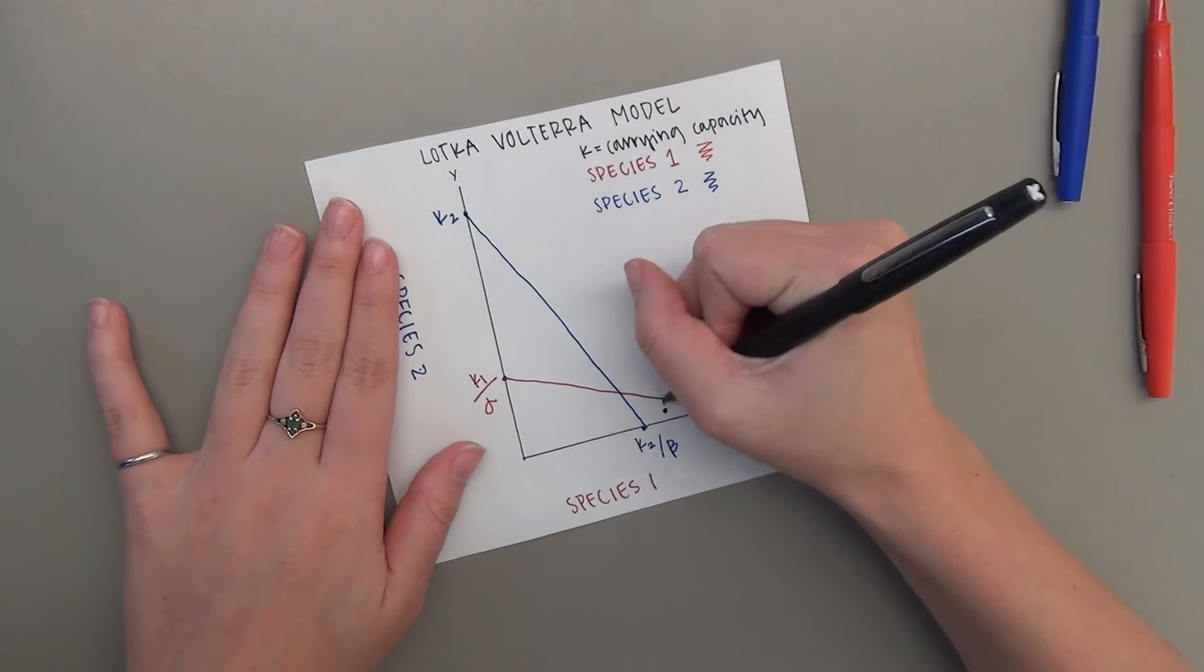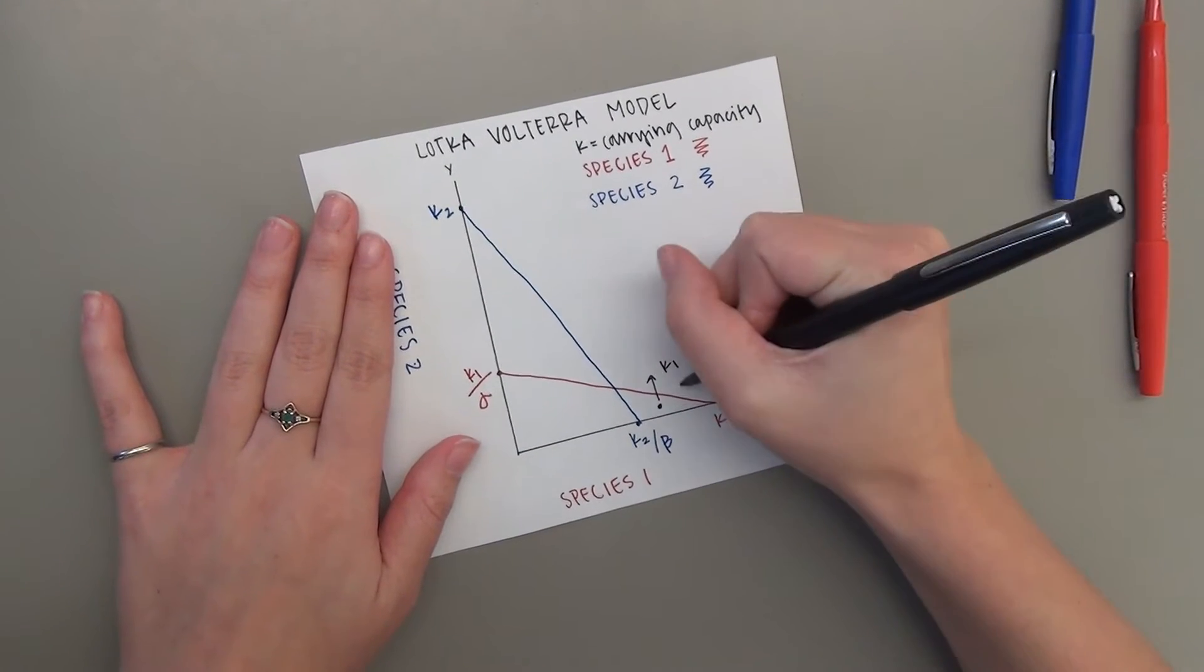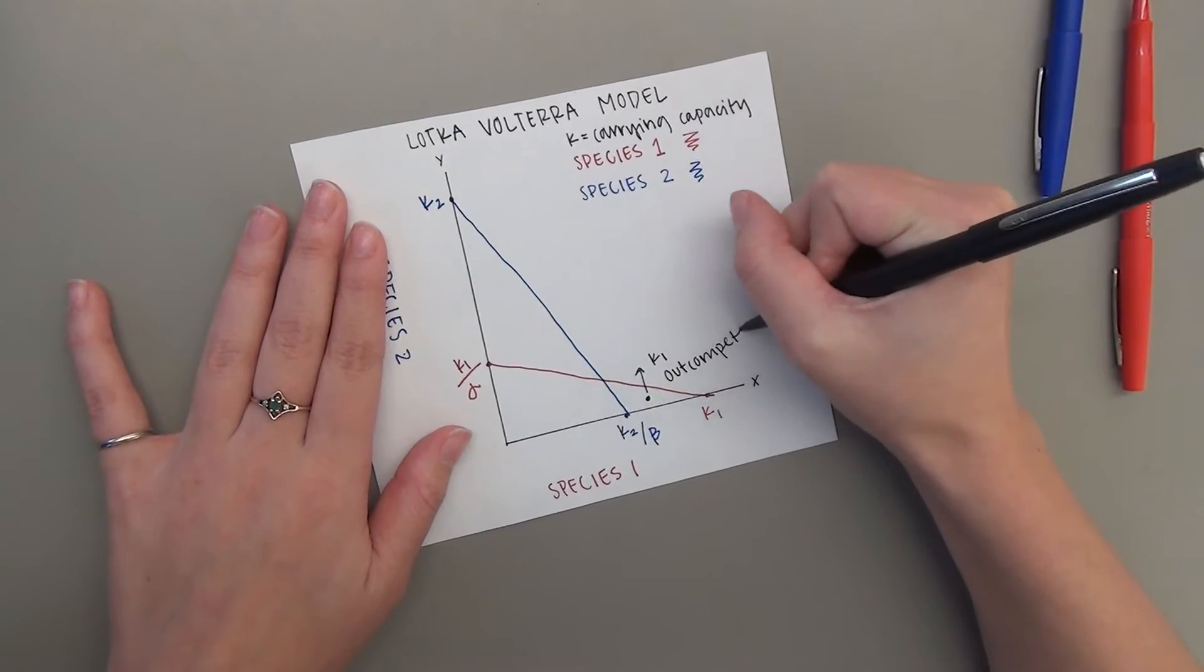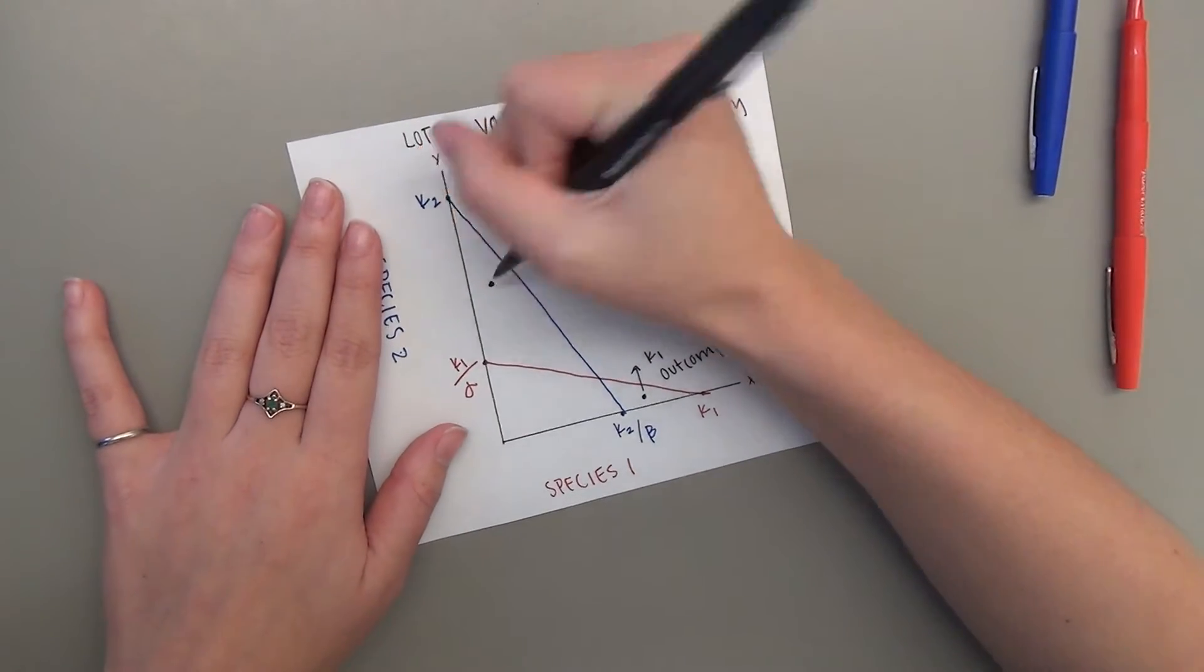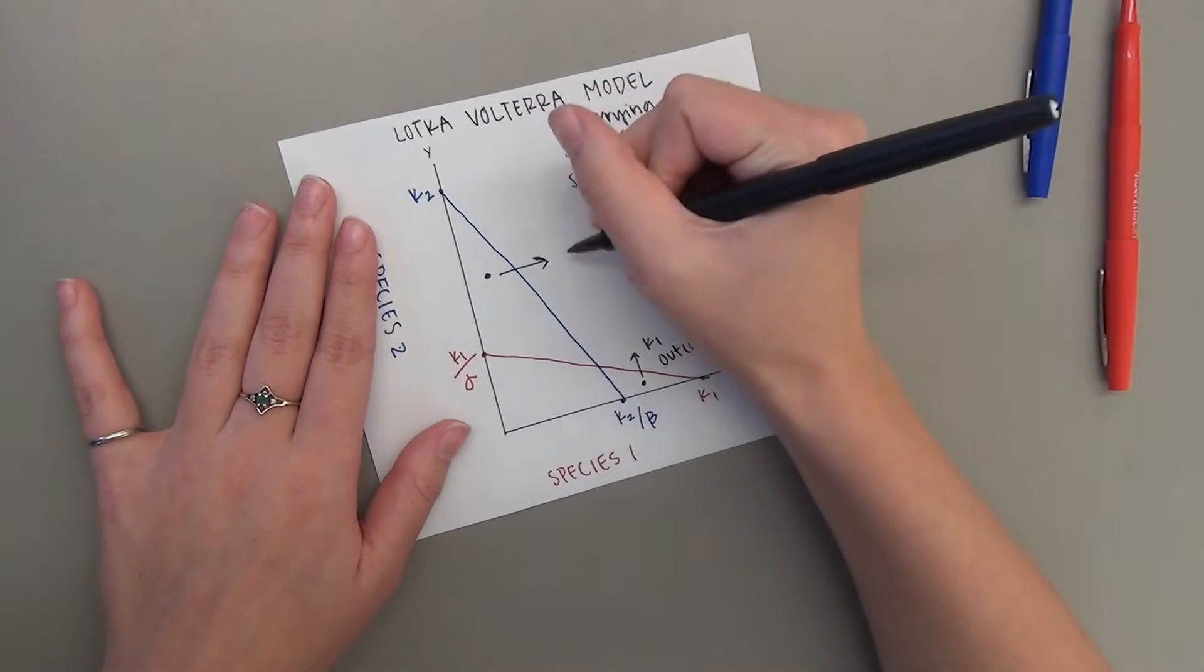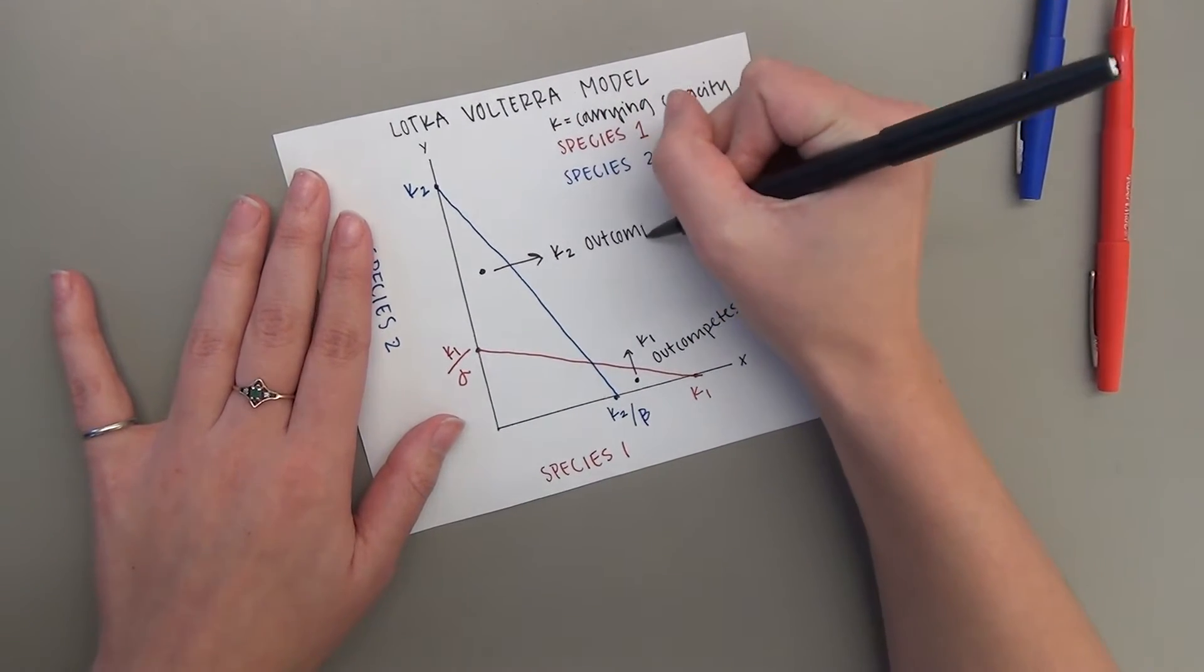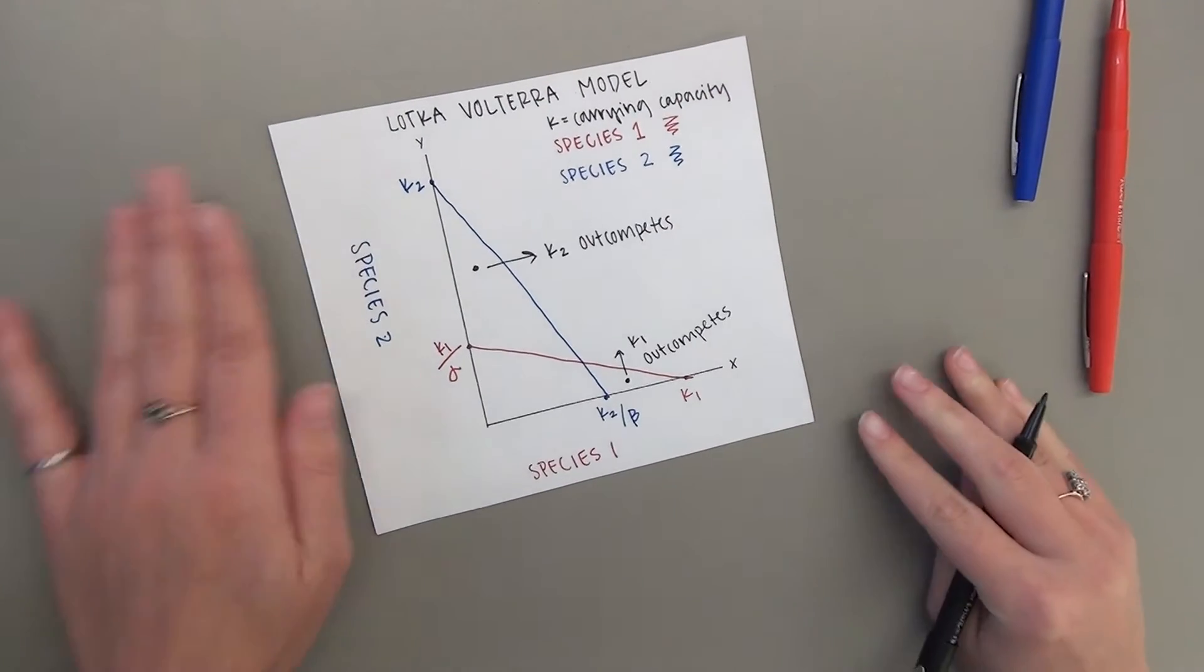When the two lines cross, depending on the outcome of the graph, competitive exclusion may or may not occur. Competitive exclusion can occur when two lines cross and K2 and K1 lie outside of K1 over alpha and K2 over beta. But which species will outcompete the other depends on the starting conditions.